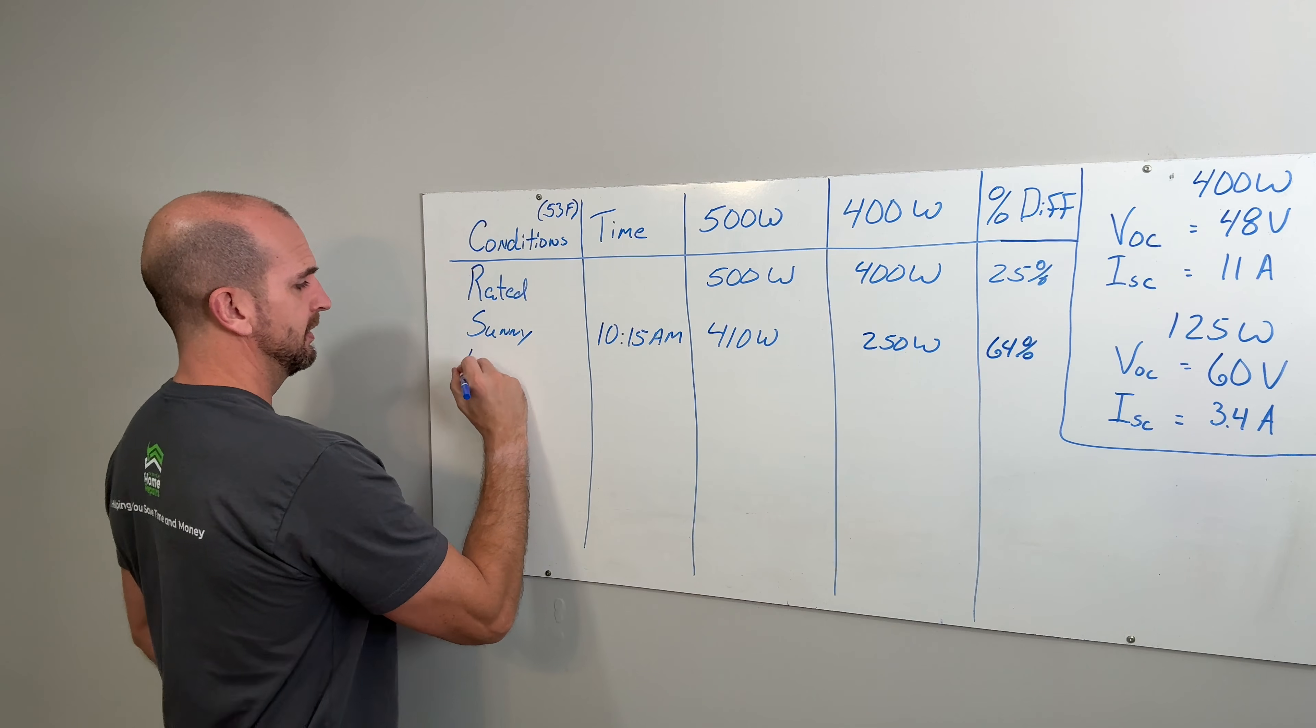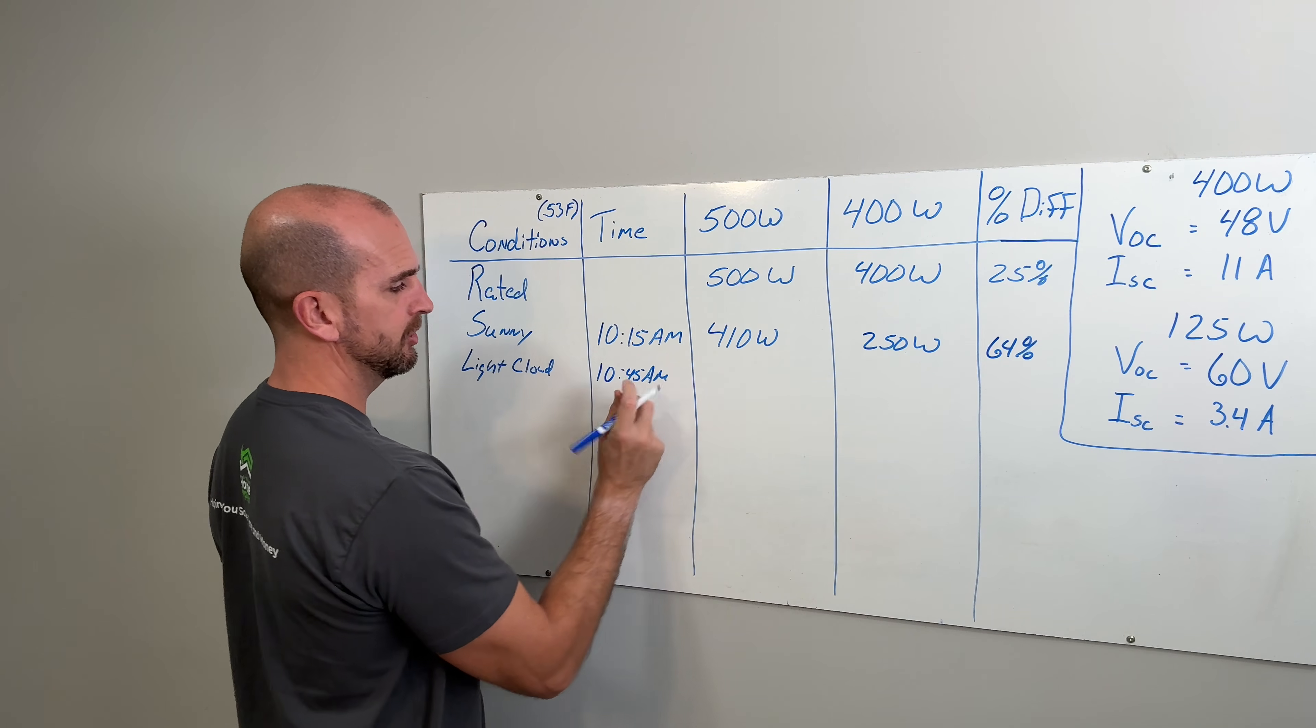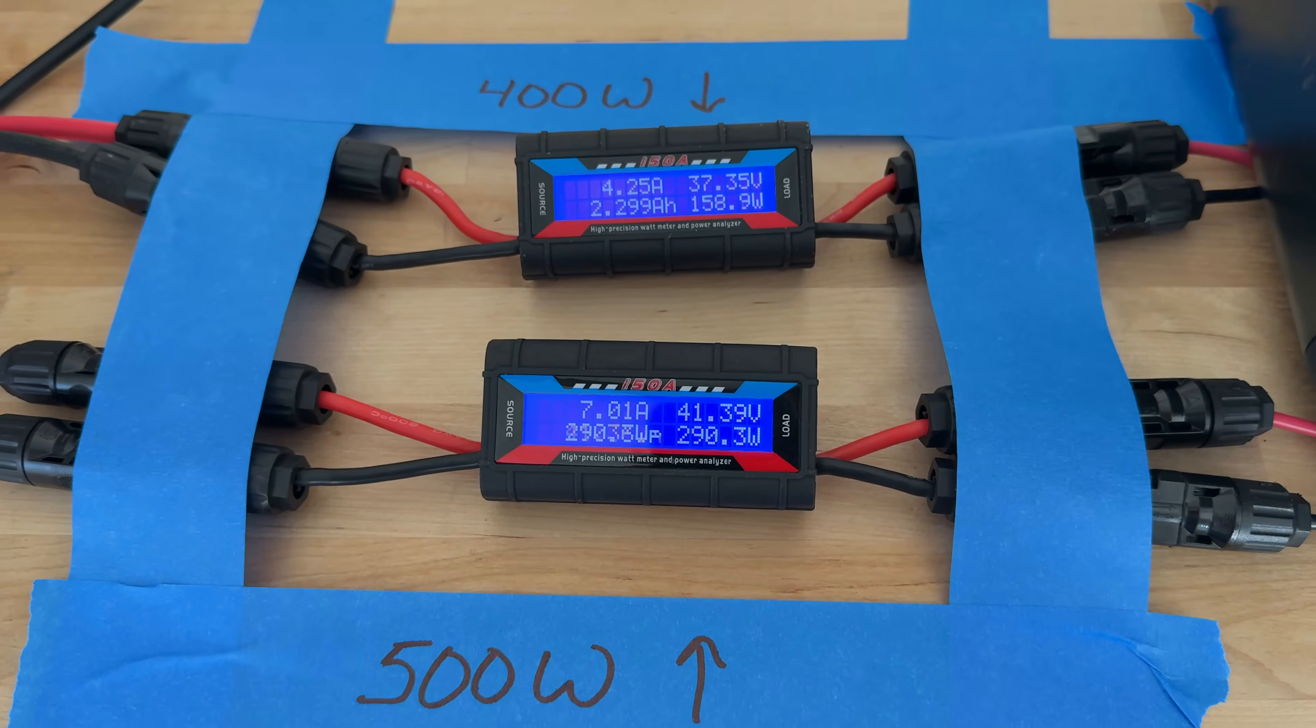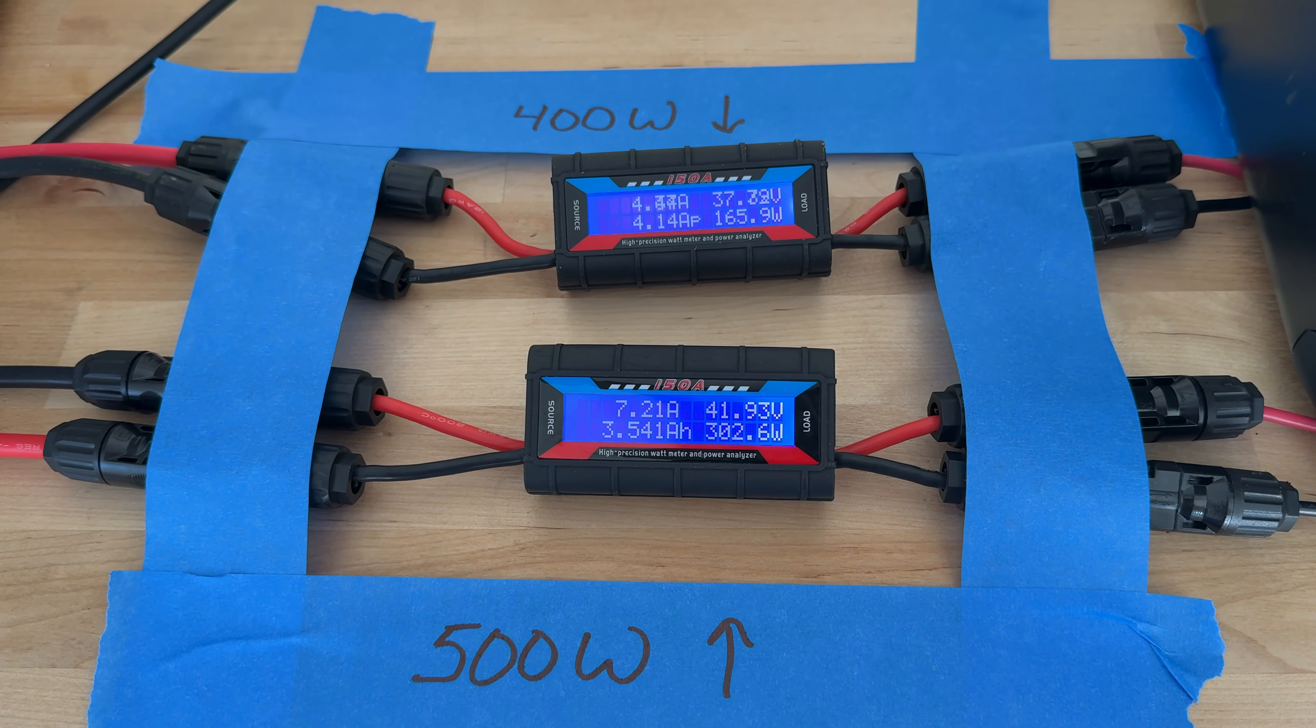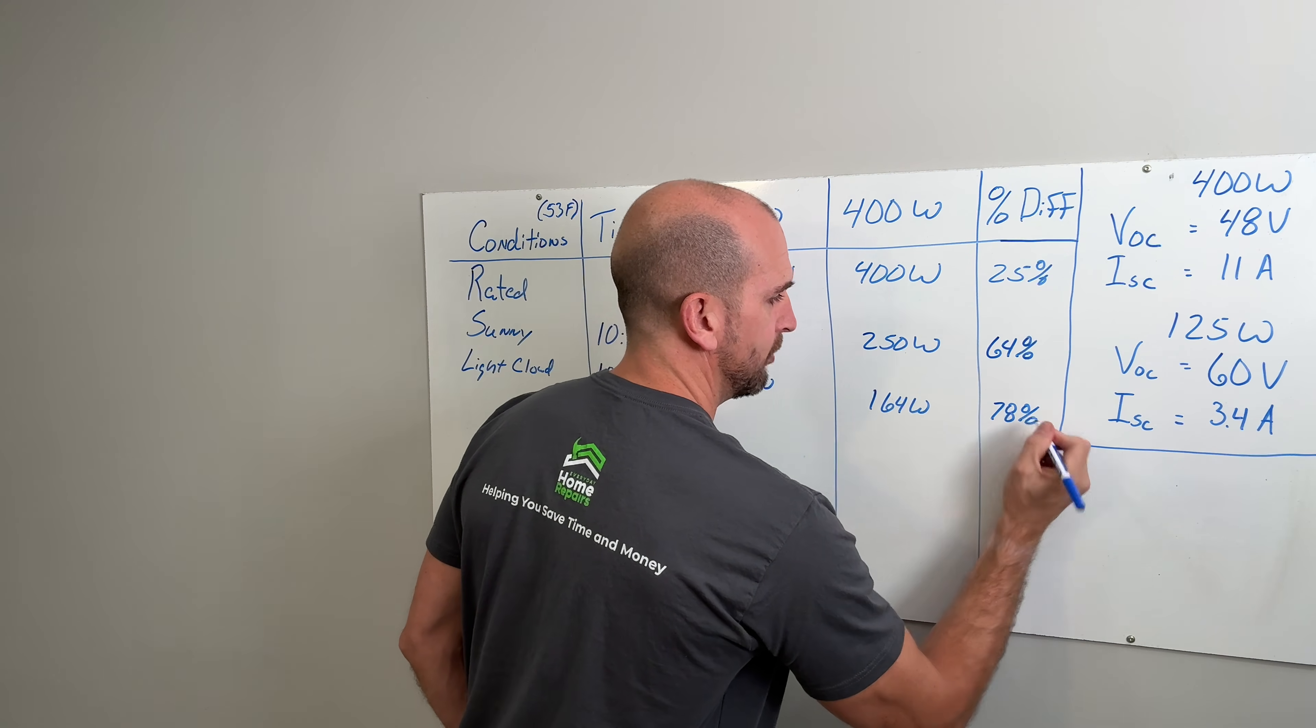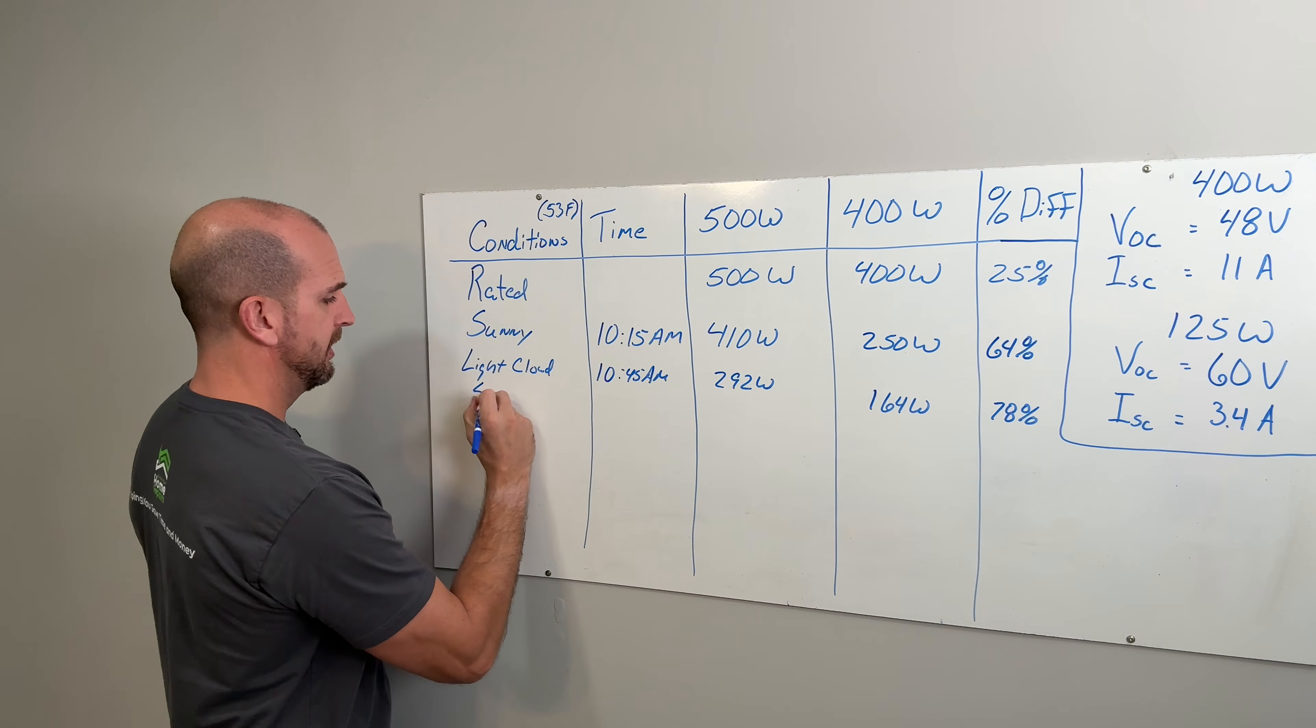Next up was a light cloudy scenario. This was at 10:45 AM, so we're getting closer to getting some good sun, and this is in the winter months, so we are kind of limited in the amount of sun we get per day. 292 watts is what we saw out of the 500 watt panel and 164 watts out of the 400 watt panel, resulting in 78 percent more power coming from the modular design. You can see we are getting quite a bit more out of the 500 watt.